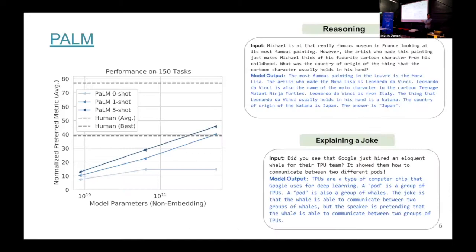With PaLM, if you measure 150 NLP tasks against average human performance, the largest model gets on par with it. That doesn't mean these models are as good as humans, but the progress over the years has been astonishing. You can see impressive examples from Google on reasoning tasks. The model can also explain jokes — jokes that were never seen during pre-training — though explaining them makes them lose their funniness.